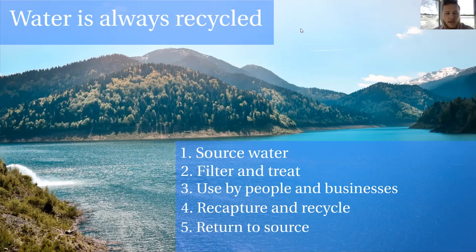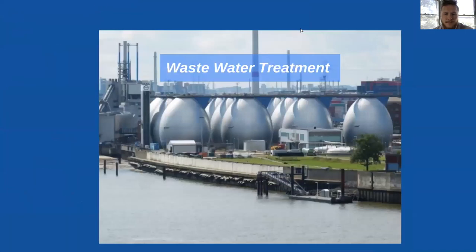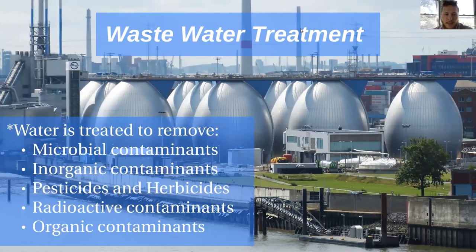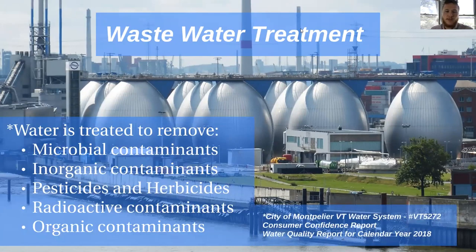After that process it's returned to the source. It's important that it's treated, because during our use of the water we are introducing different kinds of contaminants into it. At the wastewater treatment plants, water is treated to remove a number of different kinds of contaminants: microbial contaminants, inorganic contaminants, pesticides and herbicides, radioactive contaminants, and organic contaminants.